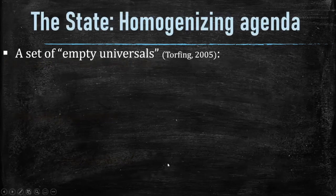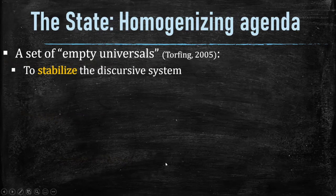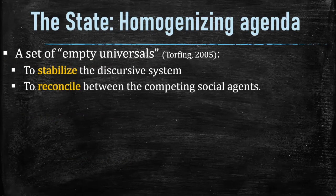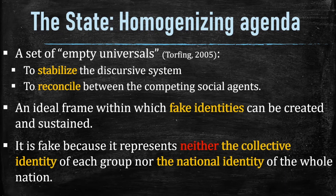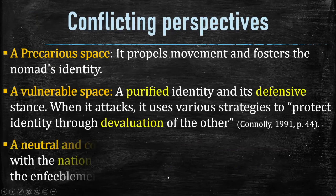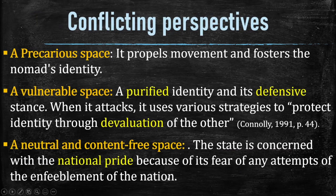To wrap up: the official discourse has its own agenda but fails to see the other perspectives because it focuses on empty universals and legitimizes an ideal frame of the nation without caring about the interaction between the other actors. We have three spaces: the precarious space of the nomad, the vulnerable space of the people at the center, and the space of public discourse, which is neutral and content-free with no conflict.